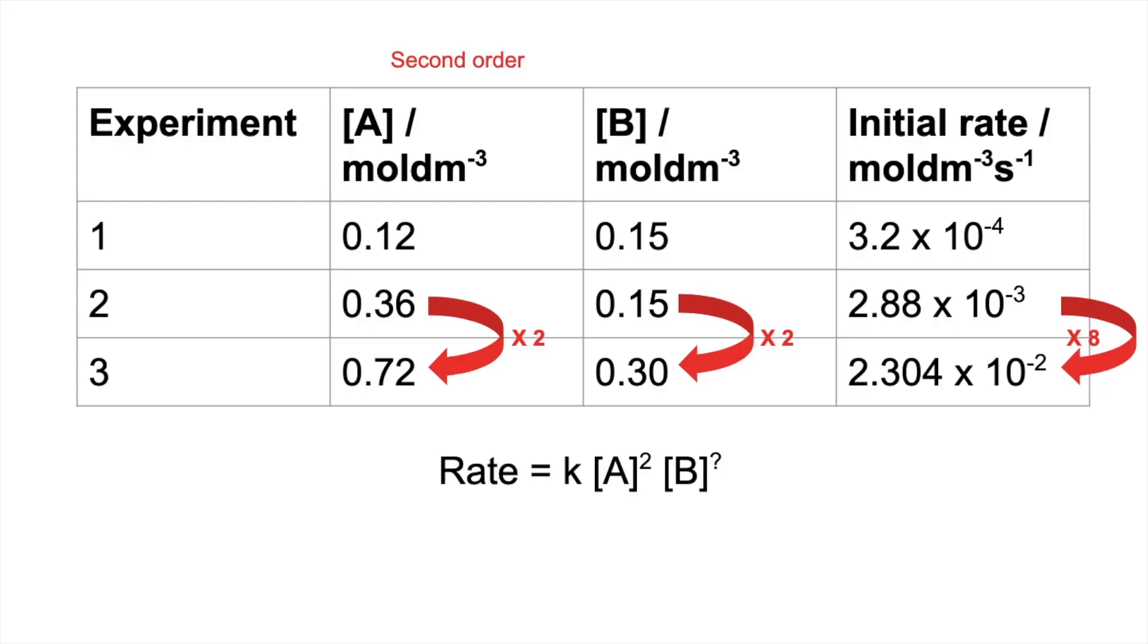Plug in the numbers we know so far. So the rate's got to go up 8 times. We know that the concentration of A is going to double, but we're going to square that, so that's going to give us times 4. And then we're going to multiply that by the doubling of B raised to the power of the order. So effectively, we need the answer to this 2 to this unknown power to be 2, so that when you go 2 times 4, you get the 8. So obviously, the order for B has got to be first.